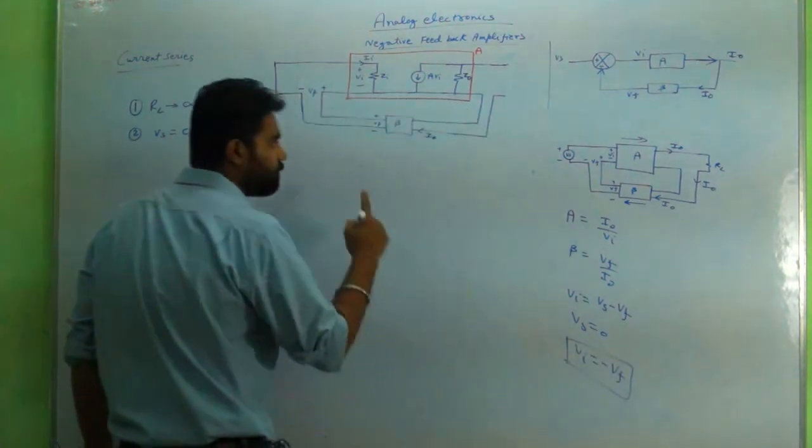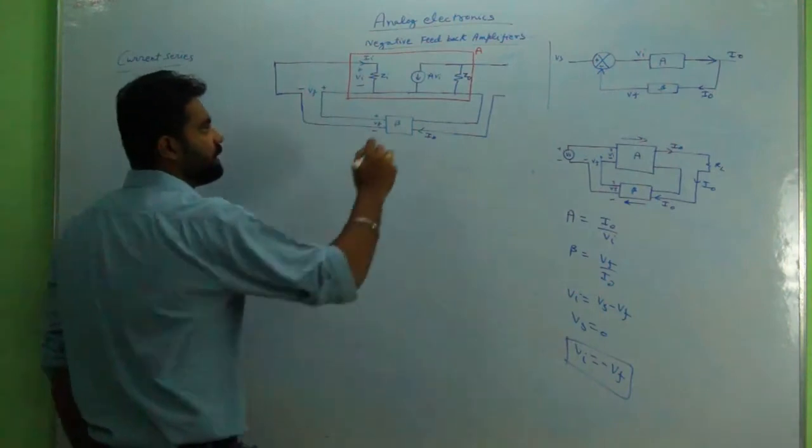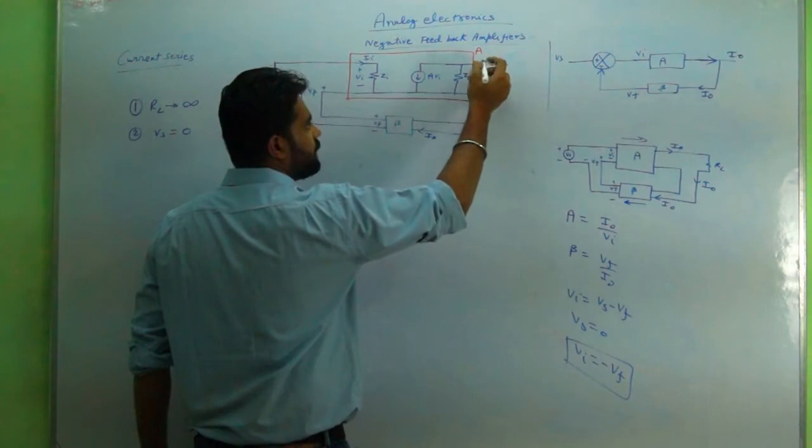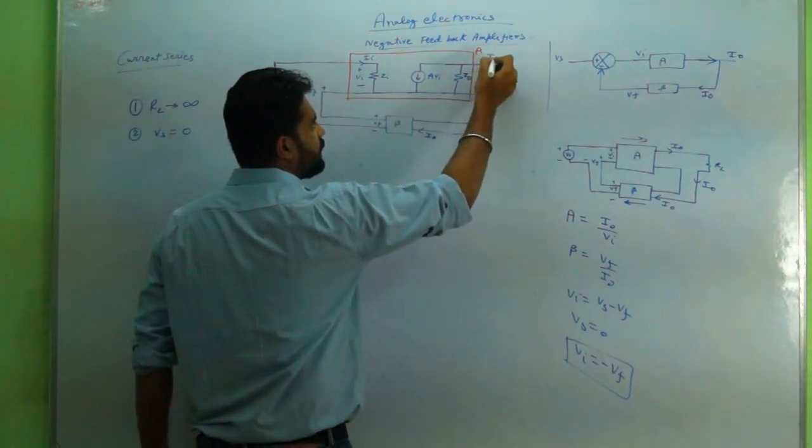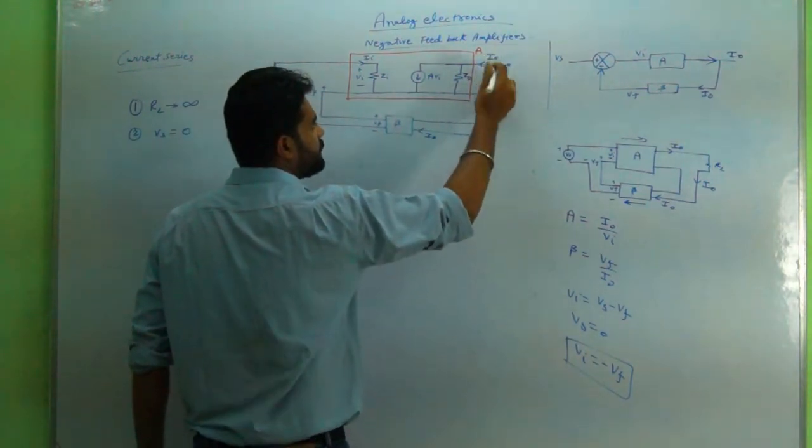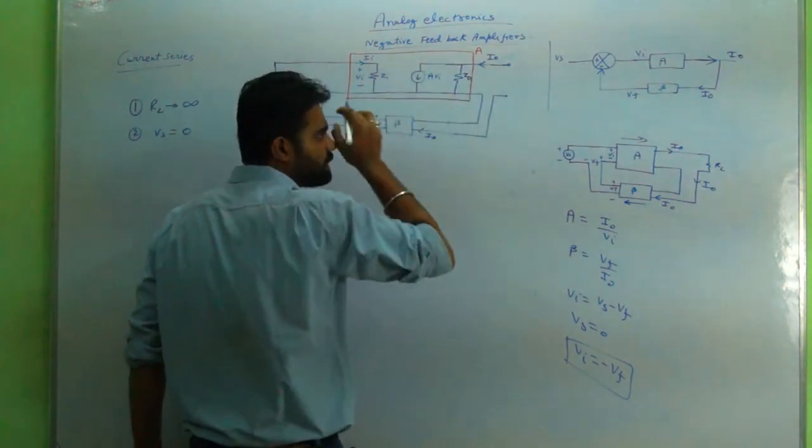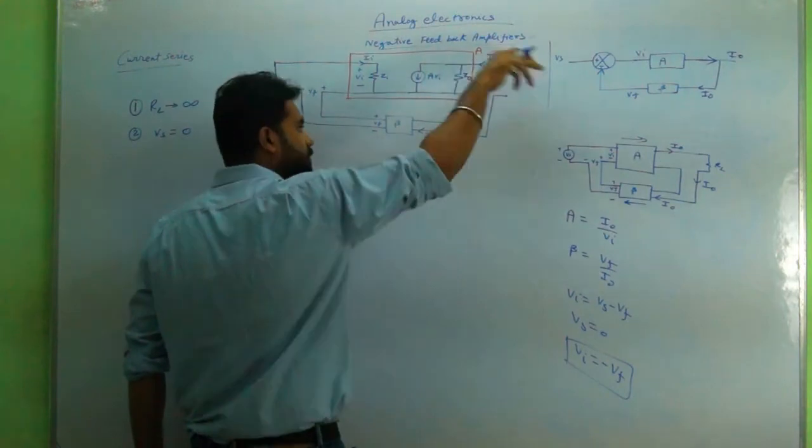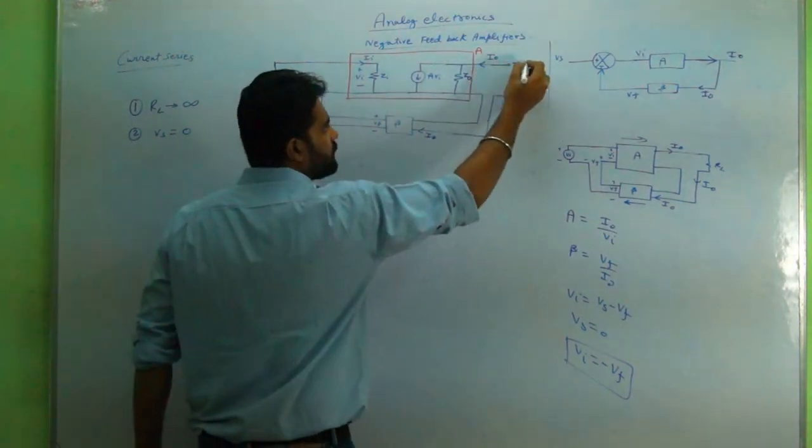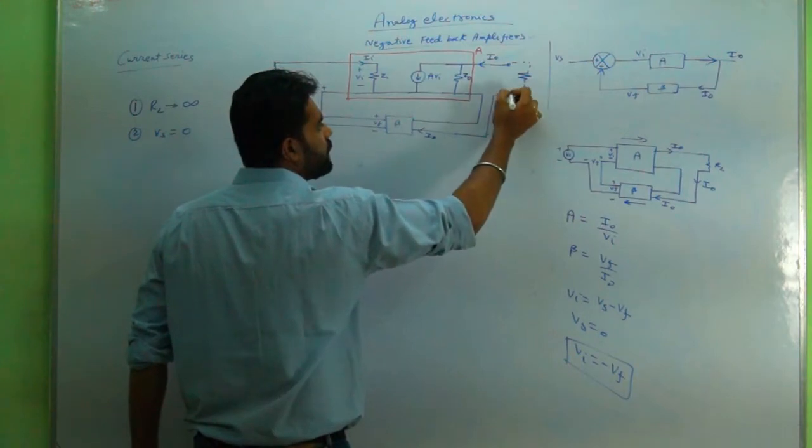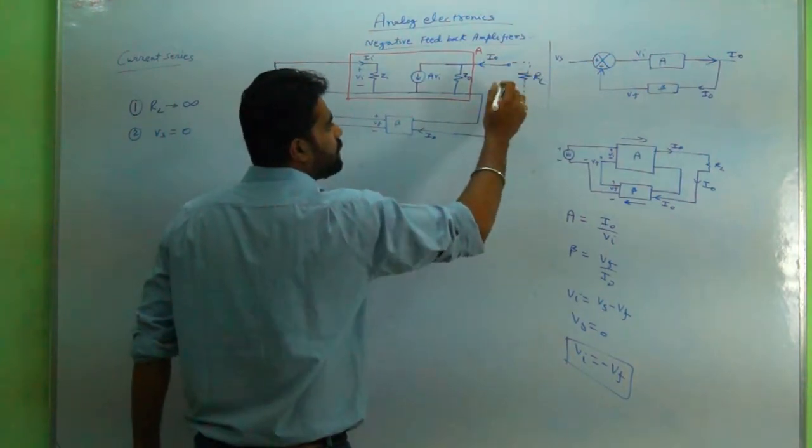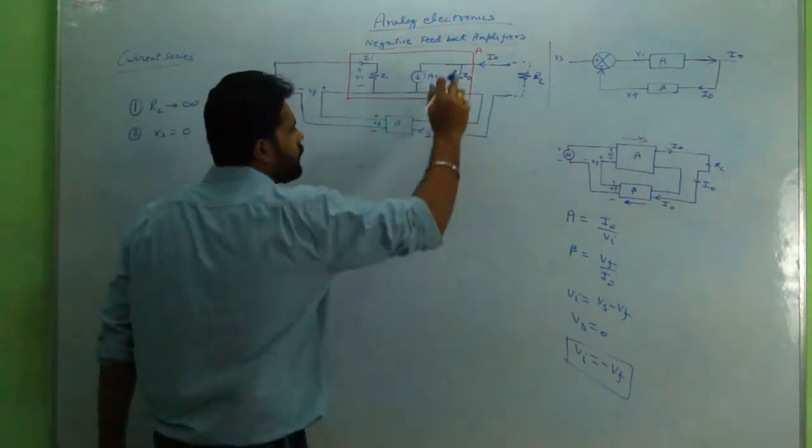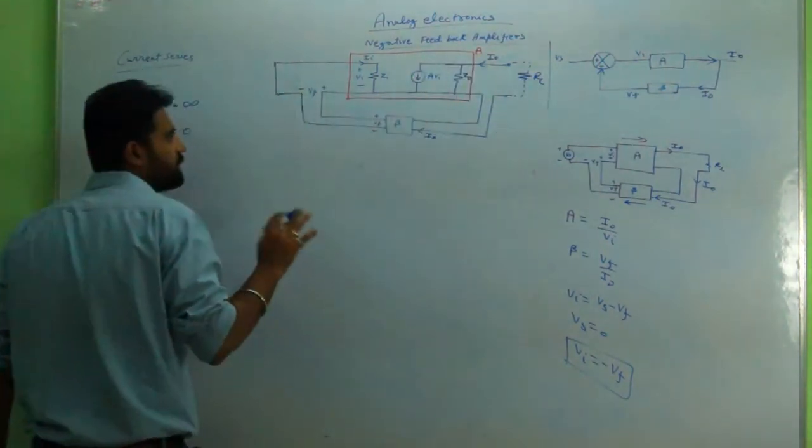This is the condition we'll follow. Another thing is i_naught current, which is the output current. I'm taking it in this direction. It is showing in this part, but whatever i_naught I am taking in this direction can be taken as the output. Ultimately R_L will be joined later on. For this instance we are taking R_L as infinity.